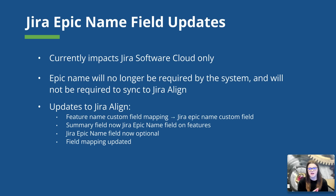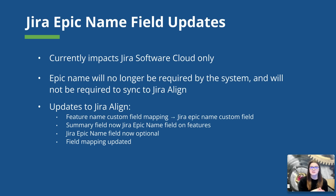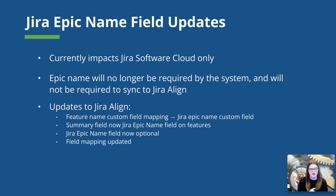In Jira Align, the Jira Epic Name Field will become optional. Additionally, there is going to be an update to the mapping of the field. Going forward, the Jira Software Summary Field will sync with the Title Field on Features in Jira Align, and the Jira Software Epic Name Field will sync to what we will now call the Jira Epic Name Field in Jira Align. We did a full breakdown video covering this change in depth, including our recommendations for admins — you can check out that link in the description below.